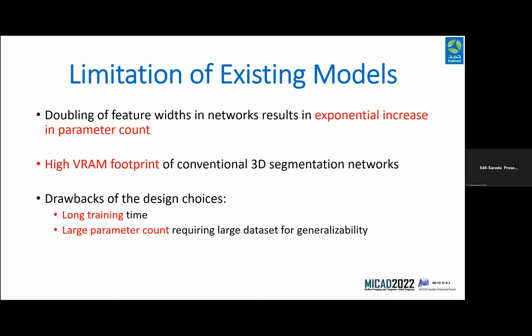Regarding the limitations of existing work in the literature: the most popular architecture for segmentation models is the encoder-decoder architecture, which decreases the spatial dimension of the image in the encoder and exponentially increases the parameter count by doubling the feature width at every stage. This leads to high memory consumption and disk space utilization. As a result, training takes a long time due to the large number of parameters, and large datasets are needed for the models to generalize effectively.